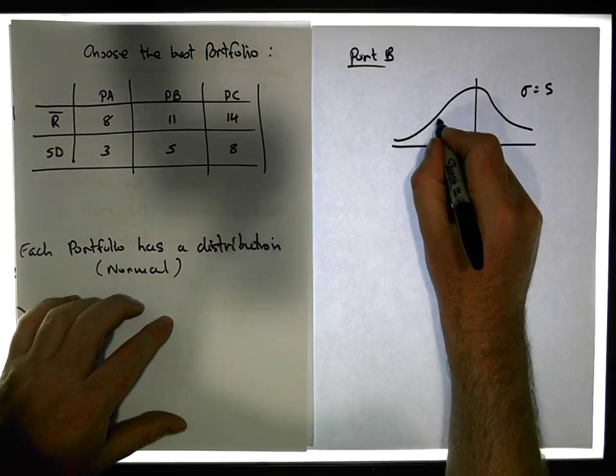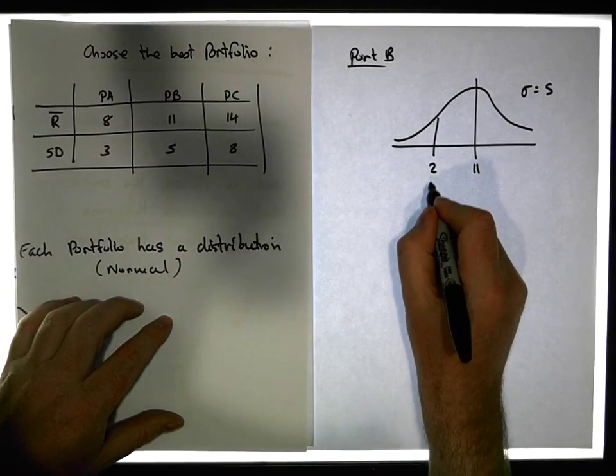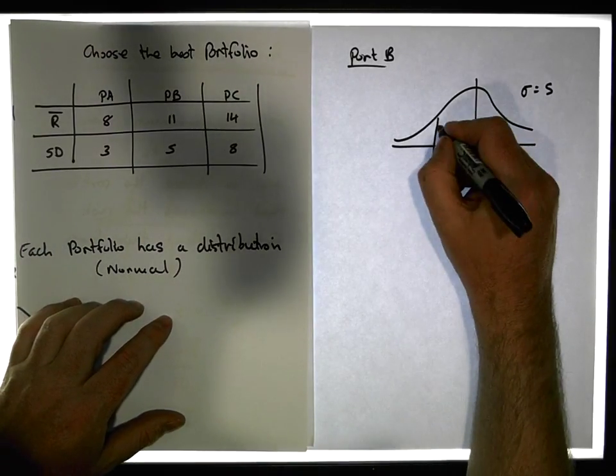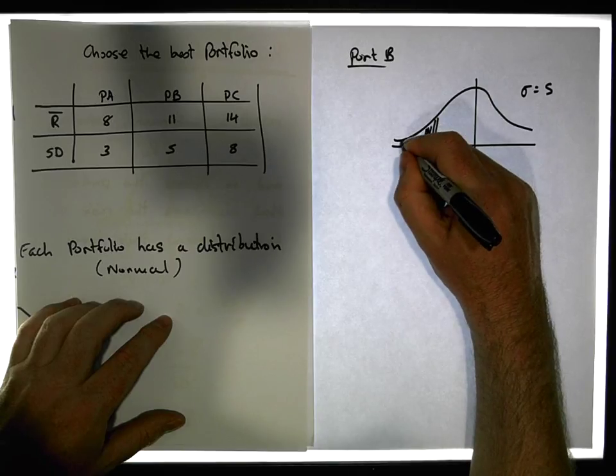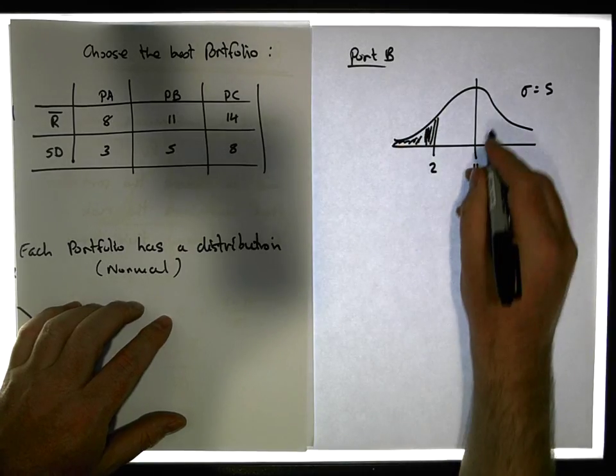And we're interested in, if we fall below 2%, what's the likelihood of us falling below 2? In other words, what's that value here?